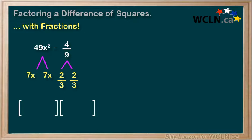Once we have those figured out, we can put a 7x in the front of each bracket, a 2 over 3 in the back of each bracket, make one bracket positive, one bracket negative, and we have factored this difference of squares, even with the fractions.